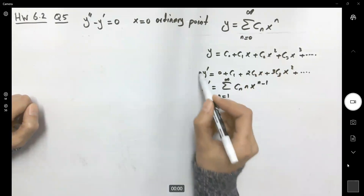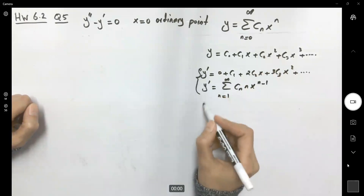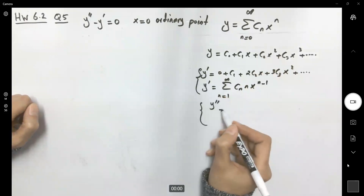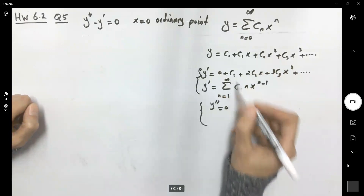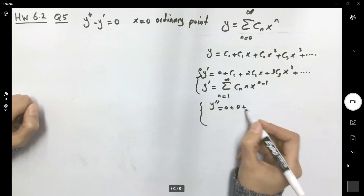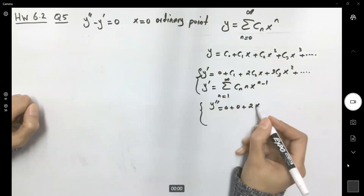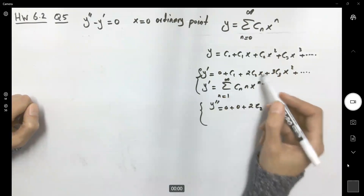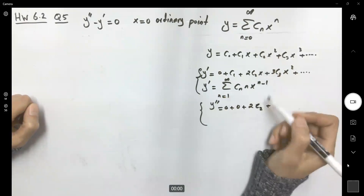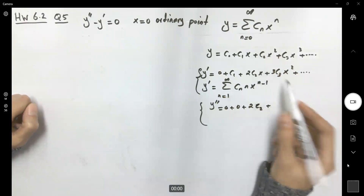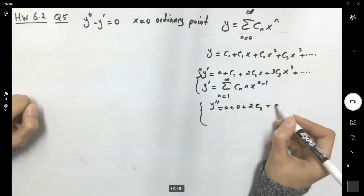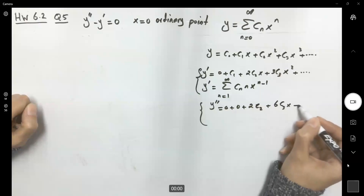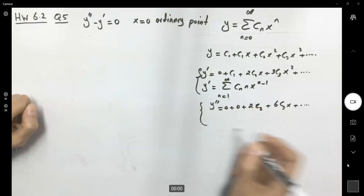Now let's take the second derivative. The second derivative becomes 2c_2 (where x is to the power of zero), plus 6c_3 x, plus the rest of the terms.